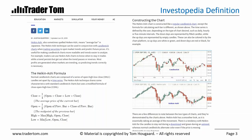When you look at the Investopedia definition of Heiken Ashi, you'll see that Heiken Ashi actually means an average bar. So rather than showing just the open, the high, the low, and the close — as you would see on a traditional bar chart or traditional candle chart — what you're actually seeing is almost like a weighted moving average where some parts of the price development have more emphasis than other parts.